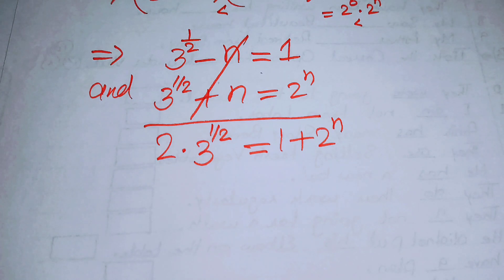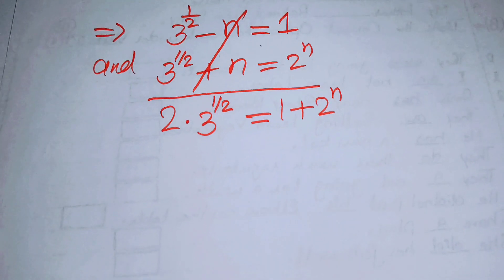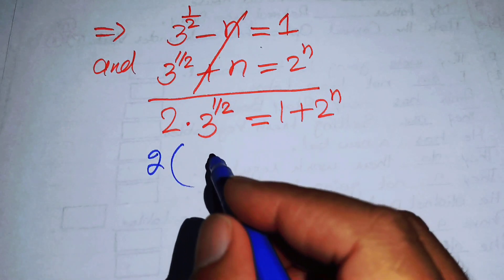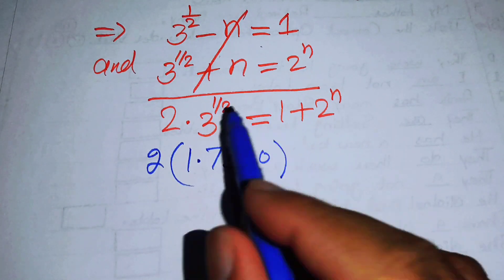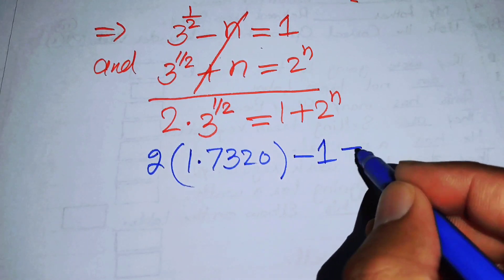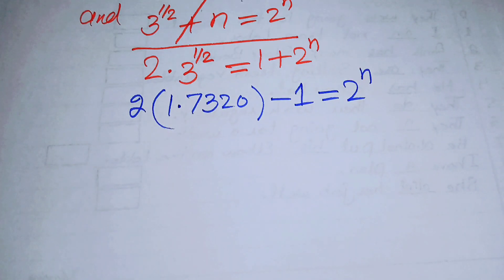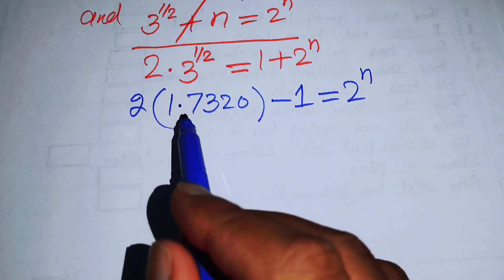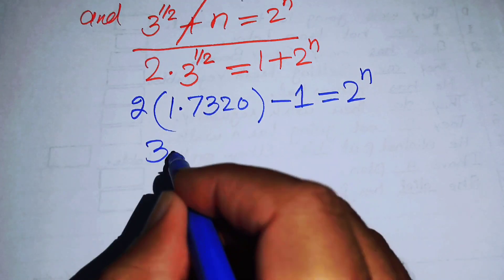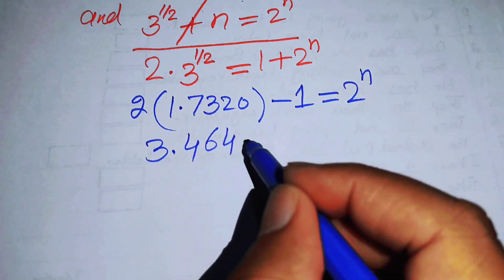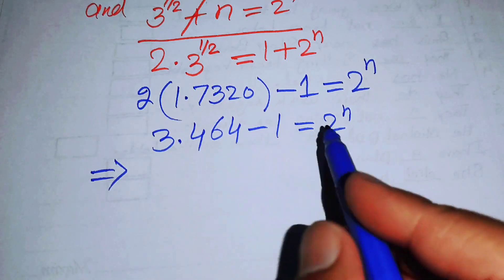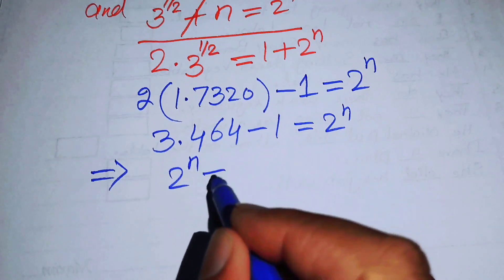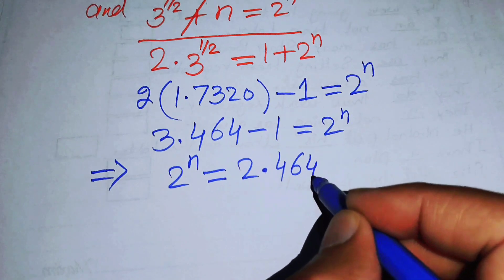We can use a calculator to find 3 to the power of 1/2, which is the square root of 3, equal to approximately 1.7320. Moving the 1 to the left side gives: 2 times 1.7320 minus 1 equals 2 to the power of n, which simplifies to 3.464 minus 1, so 2.464 equals 2 to the power of n.